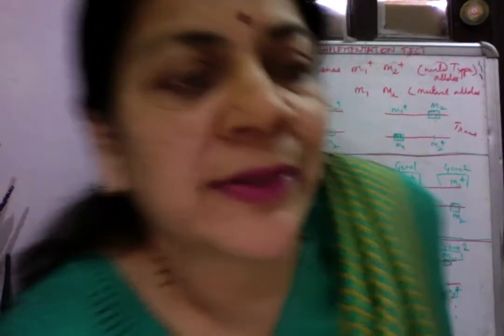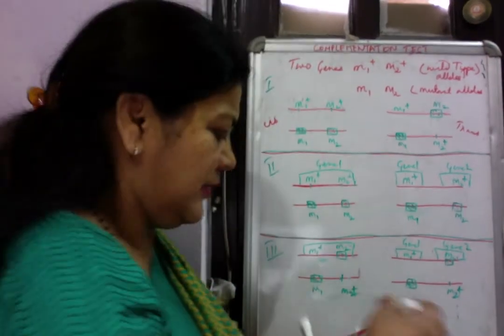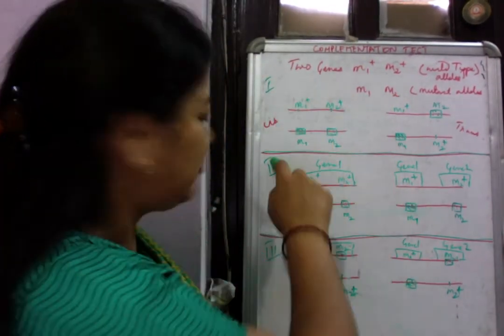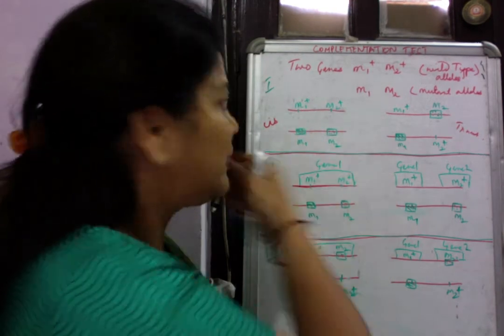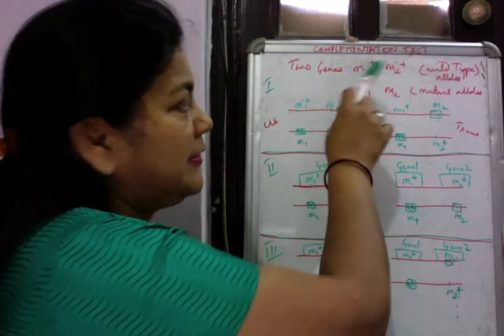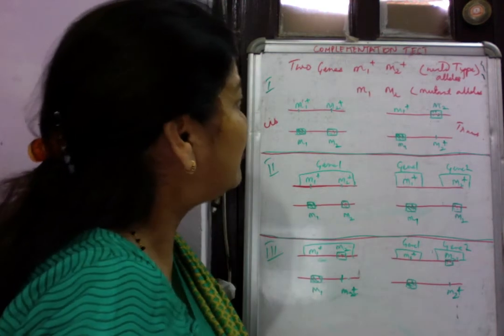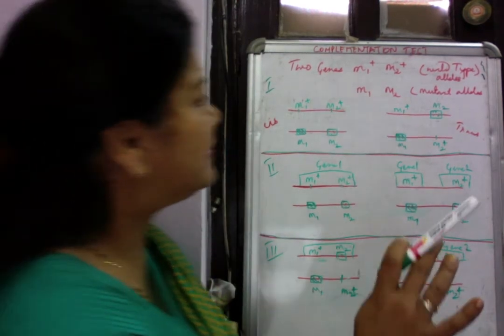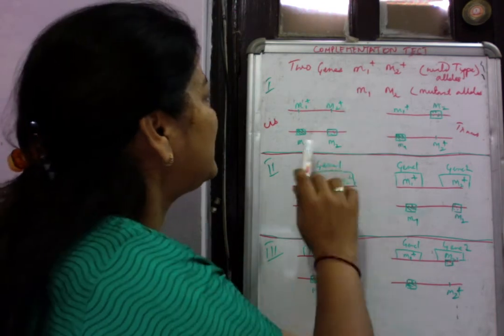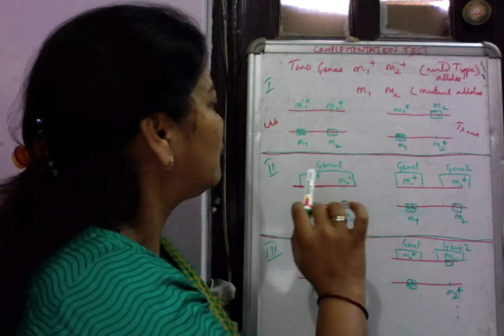For the complementation test, consider two genes: m1 and m2. If there is a wild type allele, we denote it with a plus sign — so it's m1+ and m2+, and the mutant alleles are m1 and m2. There are two ways these genes can be arranged: two mutant alleles on one chromosome and two wild type alleles on the other — this configuration is called cis, or coupling.